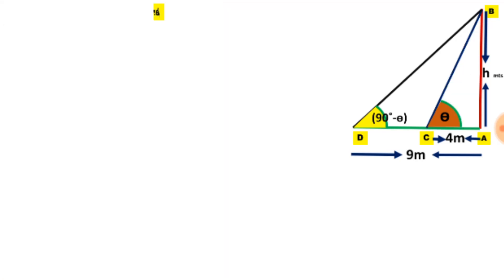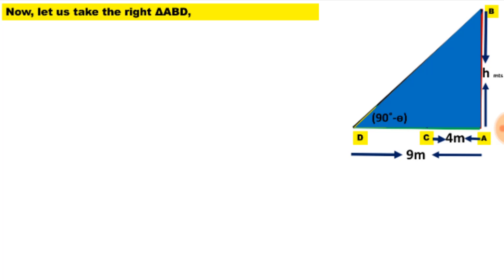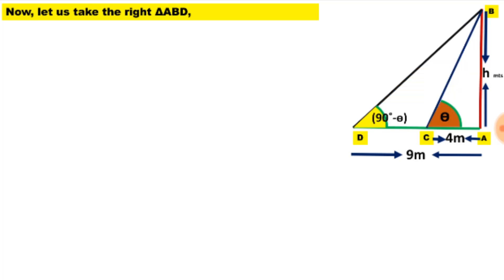Now let us consider the second right triangle, triangle ABD. The given angle here is 90 minus theta. The opposite side for this angle is AB, which we need to find, and the adjacent side AD equals 9 meters. Again we use the tan ratio: tan of (90 minus theta) equals AB divided by AD. We know that tan(90 minus theta) equals cot theta, so cot theta equals H divided by 9. Let us call this Equation 2.